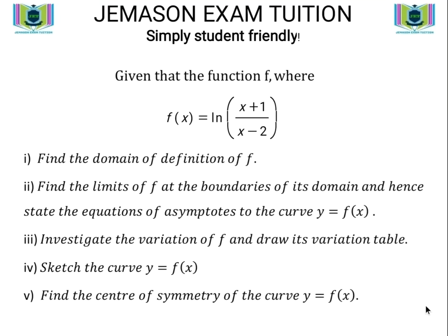Hello, today we look at this question on curve sketching. Given that the function f, where f of x equals ln of (x plus 1) all over (x minus 2), find the domain of definition of f, find the limits of f at the boundaries of its domain, and hence state the equations of asymptotes to the curve y equals f of x. Investigate the variation of f and draw its variation table. Sketch the curve y equals f of x. Find the center of symmetry of the curve y equals f of x.